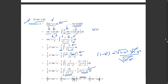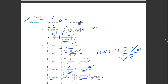For the first term we get ½x² sin⁻¹x and we leave that unchanged. For the second term we need to find the integration of x²/√(1−x²), so we use substitution.